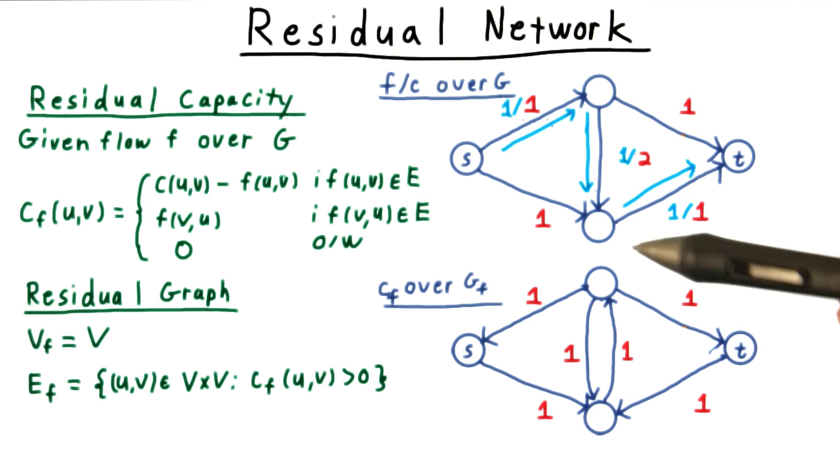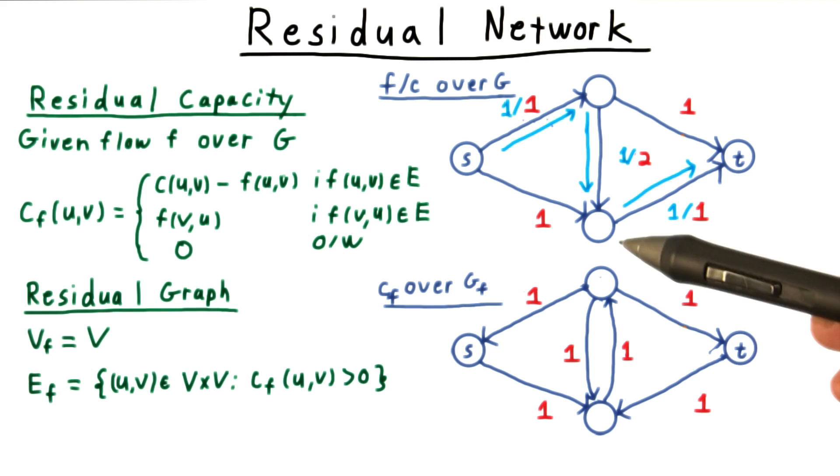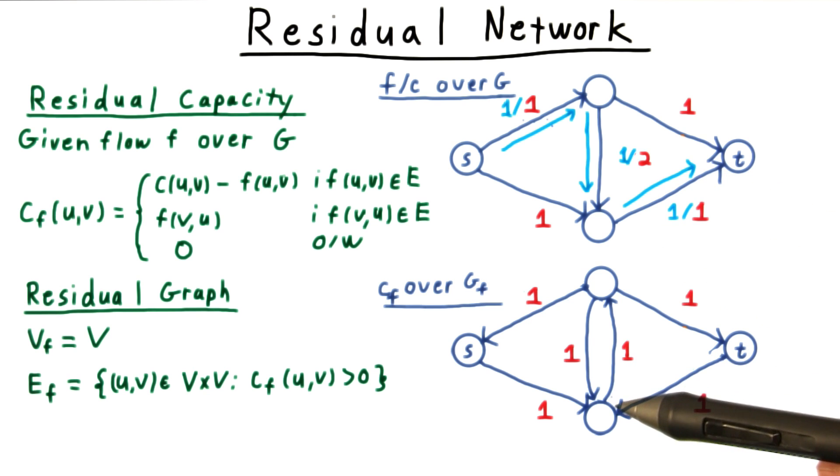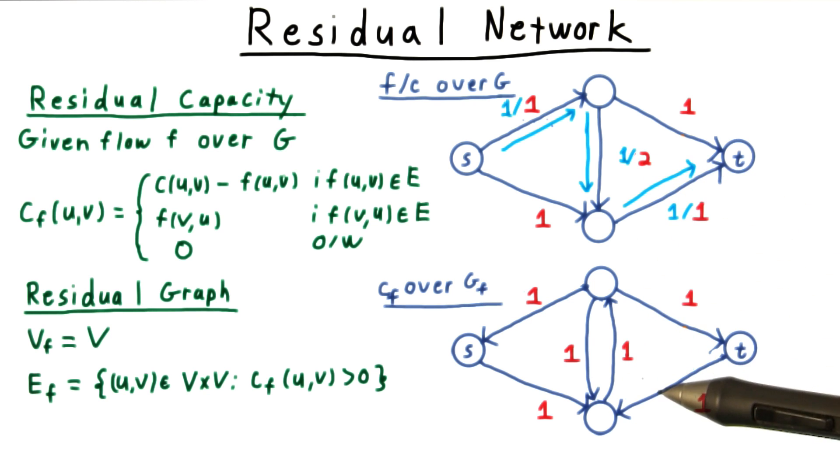This edge in the middle gets interesting, because we can either send one unit of flow that would still leave us inside of these capacity constraints here, or we can unsend the unit of flow that we already sent.